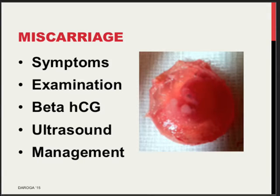We follow the same sequence: what are symptoms pointing at miscarriage, what findings at physical examination, what is the use of the absolute value of beta-HCG in serum, what can we visualize on ultrasound scan, and last but not least, what management options do we have and what are the pros and cons.